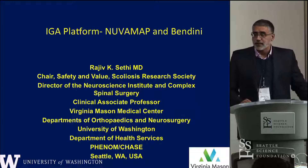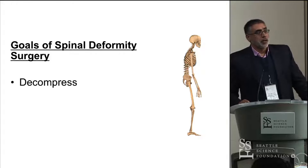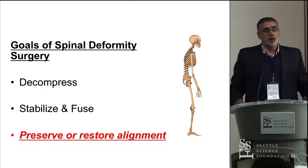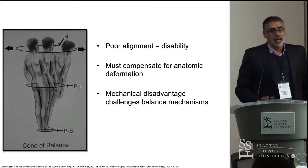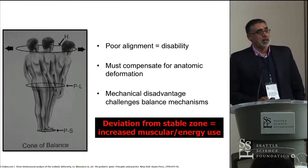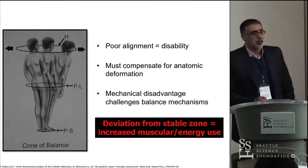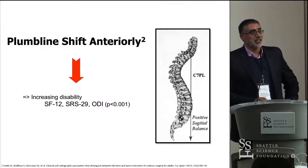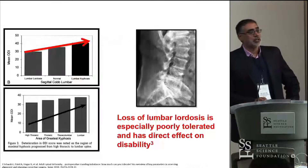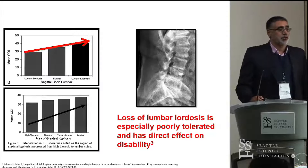Goals of spinal deformity surgery are obviously to decompress the neural elements, to stabilize and fuse, and to preserve and/or restore alignment. We all know about poor alignment and disability. We know about compensation mechanisms involving the pelvis, and the incredibly increased muscular energy that we must use when the lumbar spine is flat. When the plumb line shifts anteriorly, there is increasing disability, with the most disability seen in the case of lumbar kyphosis. Loss of lumbar lordosis, especially when we do that to patients, is especially poorly tolerated and has a direct effect on disability.